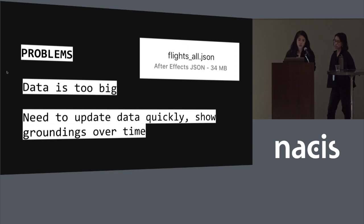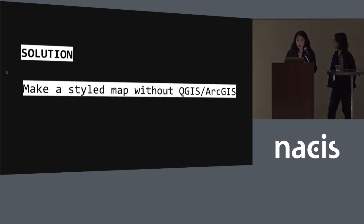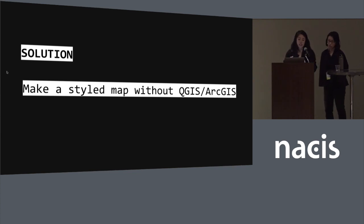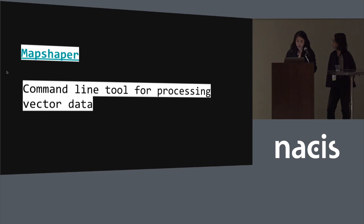It would be really slow to open that in QGIS, manipulate it, and export it — and we needed to do this multiple times as the story developed. So we needed some way to do that automatically. The solution was that we wrote a bunch of scripts to rasterize the data and style the map without ever opening QGIS or ArcGIS. One of the tools we used is called Mapshaper, a command line tool for processing vector data written by our co-worker Matthew Bloch.